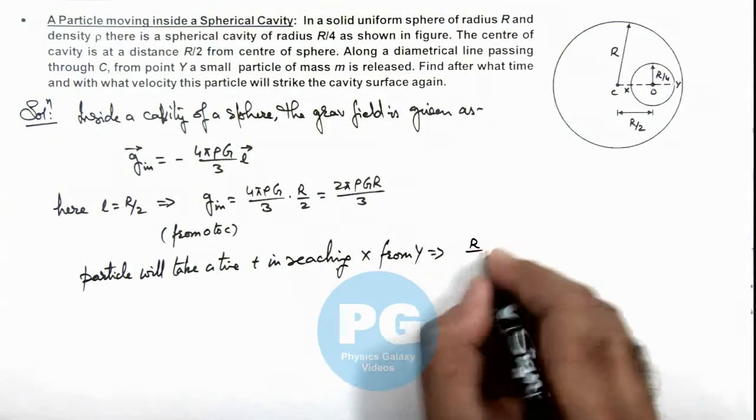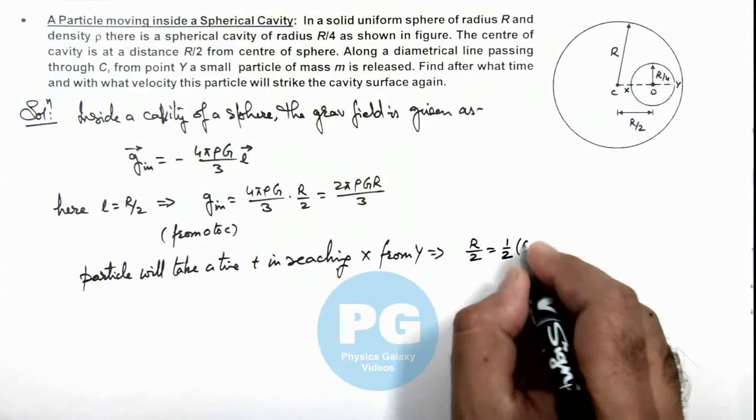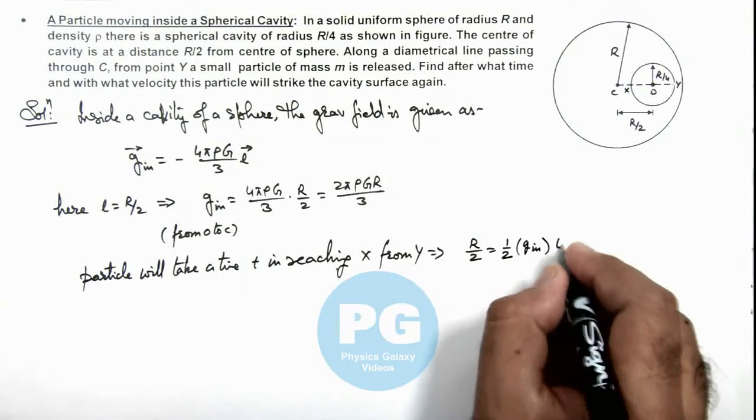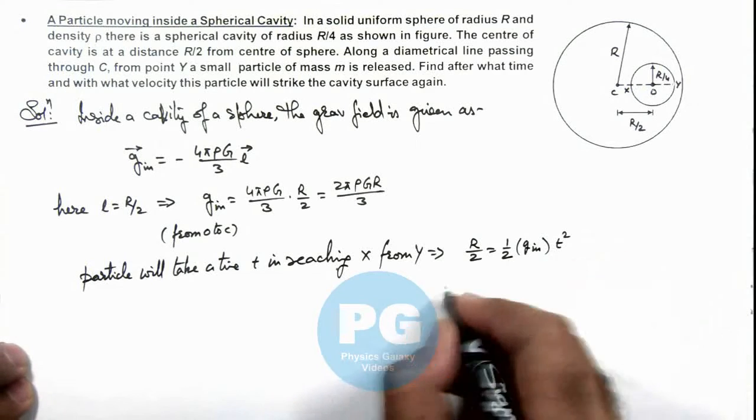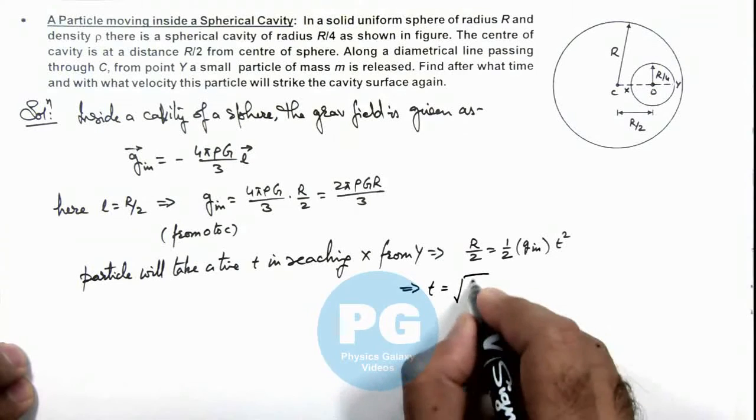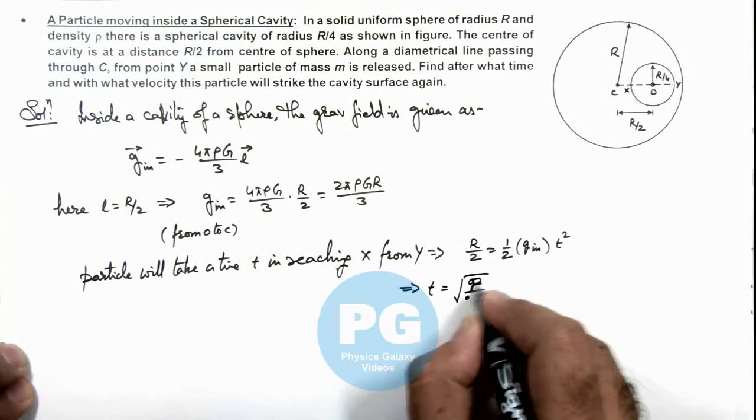So we can write R/2 equals half of acceleration times t squared. This will give us the value of time after which it'll strike is root of R by g inside,